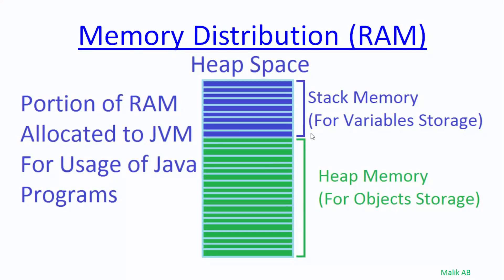A special portion of RAM is allocated to the JVM (Java Virtual Machine) for its usage by the program. That portion of RAM allocated to the Java Virtual Machine is called heap space. This heap space is further divided into two parts: stack memory and heap memory. In stack memory, values of variables are stored, and in heap memory, values of objects are stored.